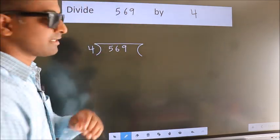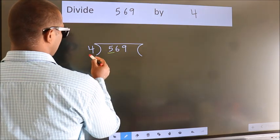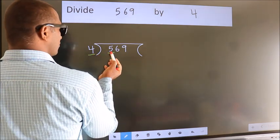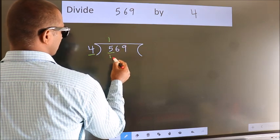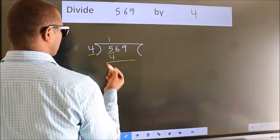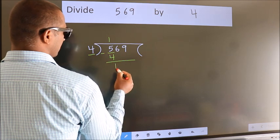Next. Here we have 5, here 4. A number close to 5 in 4 tables is 4 ones, 4. Now we should subtract. We get 1.